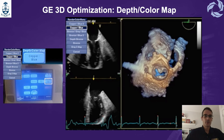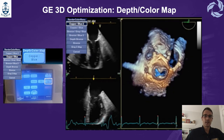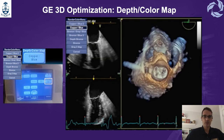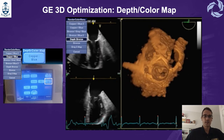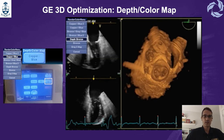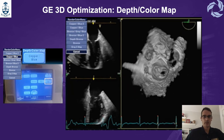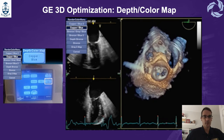You can use the depth and color map optimization. The depth and color map gives you a darker brown to the screen to again get a better impression. There are very different colors that go from copper, blue, to grey, and more, as you can see in this example.